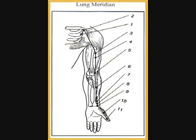Lung seven indications: headache, migraine, stiffness of the neck, cough, asthma, sore throat, facial paralysis, toothache, pain and weakness of the wrist. Lung eight indications: cough, asthma, fever, pain in the chest, sore throat, pain in the wrist.